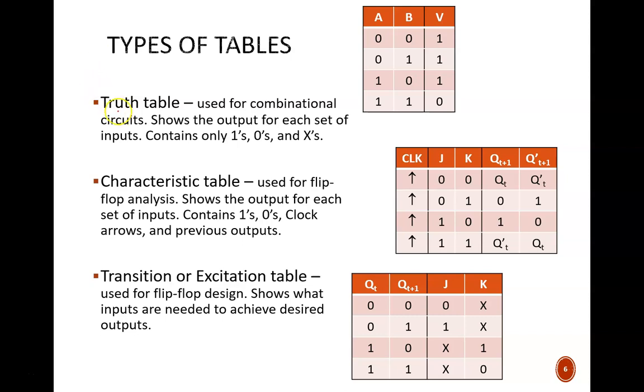Truth tables are used for combinational circuits, not sequential circuits. They show the outputs that are guaranteed for each set of inputs. As such, they usually hold only 0s and 1s, but sometimes Xs for don't care conditions.